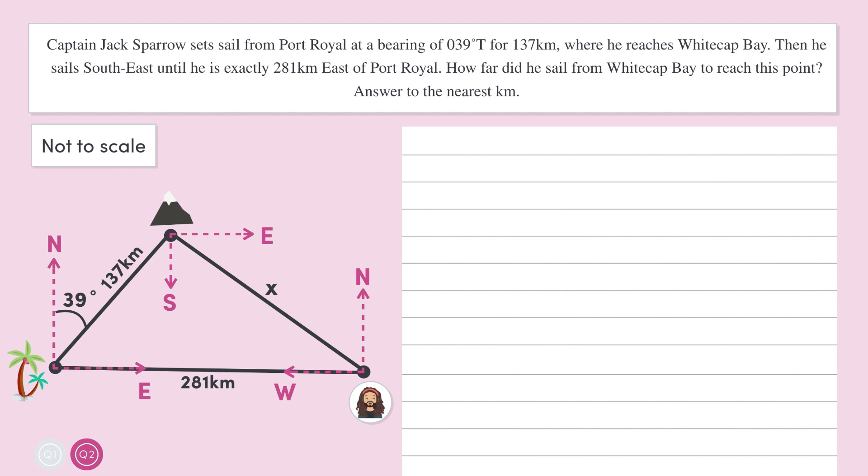Hmm, we're given the other two side lengths. So if we had this angle opposite our unknown side, which we'll call theta, then we could use the cosine rule. We know that this line here is exactly east of Port Royal. So the sum of these two angles is 90 degrees because they form a right angle. Therefore, theta plus 39 degrees equals 90 degrees. Subtracting 39 degrees from both sides gives us theta equals 51 degrees.